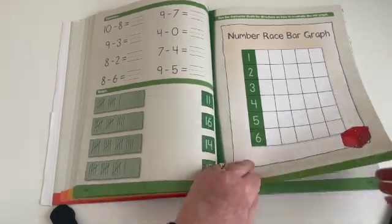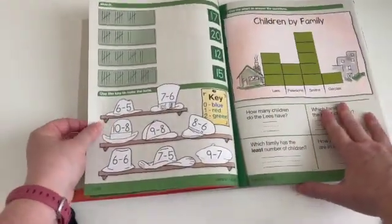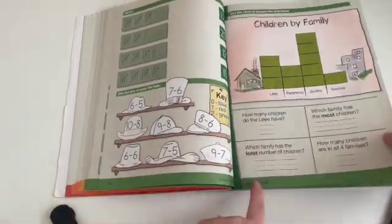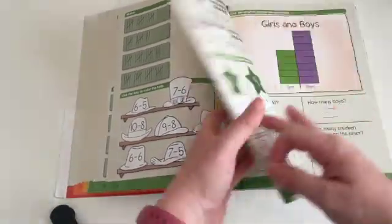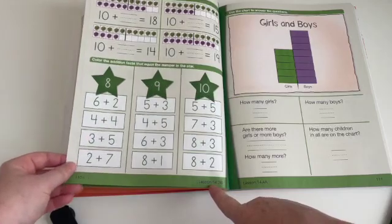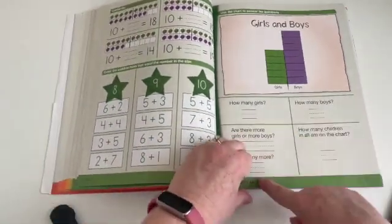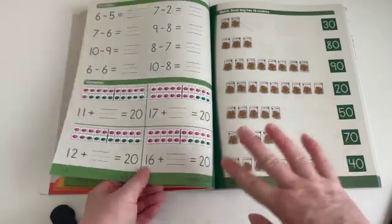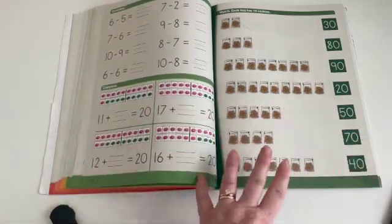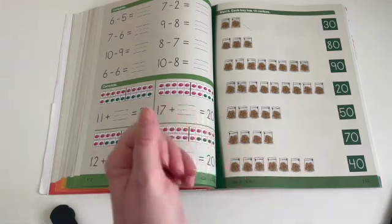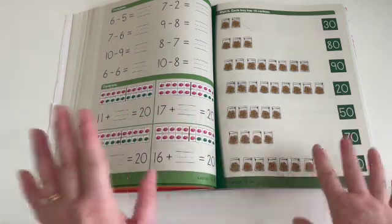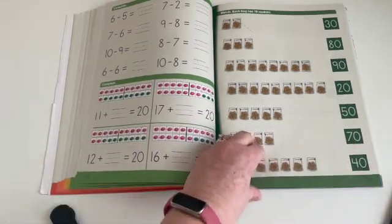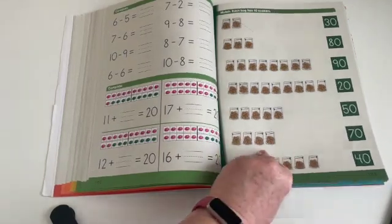And then on the back, and then we have 14.3 and 14.3b, 14.4 and 14.4b. Notice there's not any worksheet for 14.5. 14.5 is that enrichment day. We're doing the book and the enrichment activity. So there's no worksheet for that fifth day of the week. And we move into week 15.